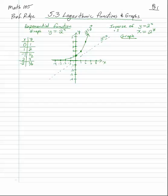The inverse is obtained by switching all the x and y values. So instead of (0,1) we do (1,0); instead of (1,2) we do (2,1); instead of (-1, 1/2) we do (1/2, -1). We can plug back into x equals 2 to the y, or just flip all the x and y values — it's the reflection through the line y equals x. So (4,2), (1/4, -2).